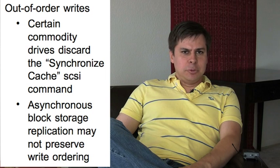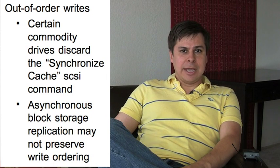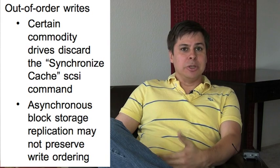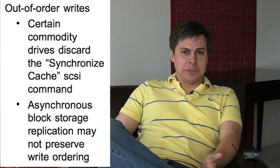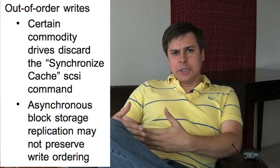So you can imagine if you have certain writes that were written to that cache and you take a power outage, it's quite possible that you've lost some particular data. And since there's no particular ordering of the way that things get flushed from the cache on disk to the spinning disk, you're not guaranteed that the write ordering was actually preserved.